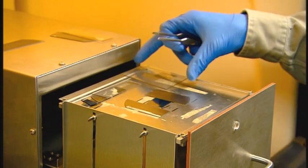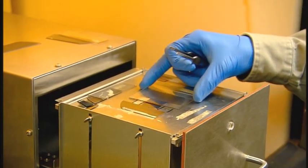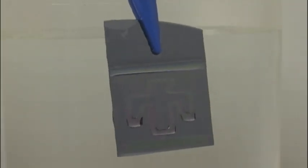Exposing a coated surface to a particular frequency of light through a photomask creates patterns of water hating and water loving regions. This can mimic the desert beetle's back.